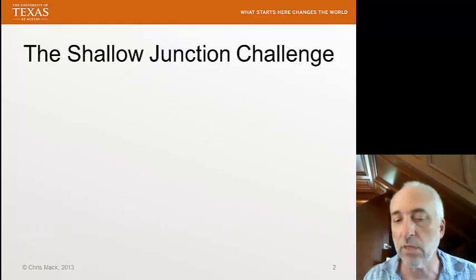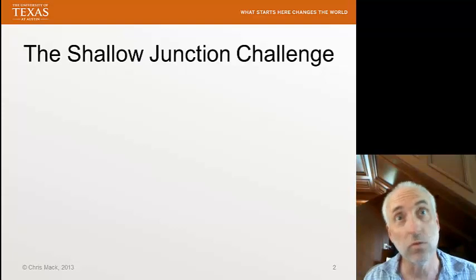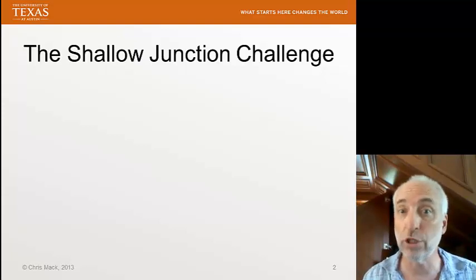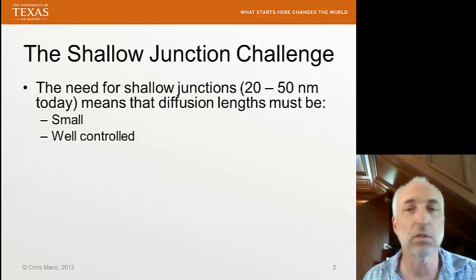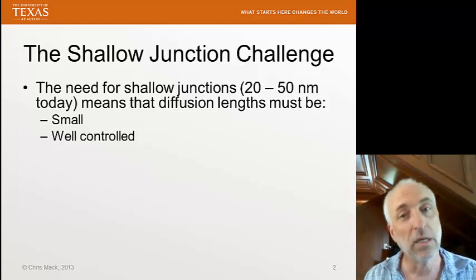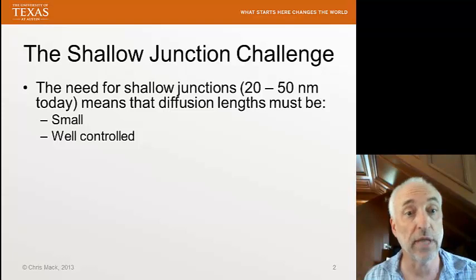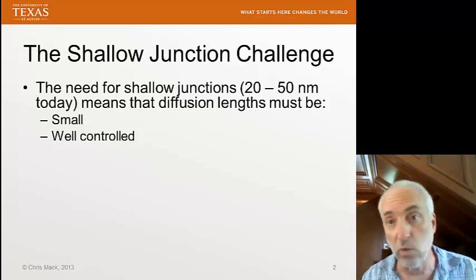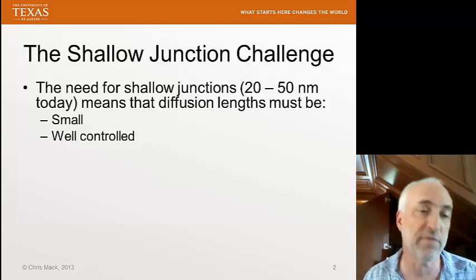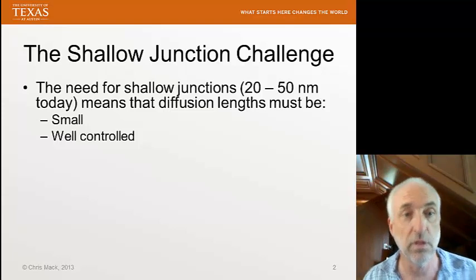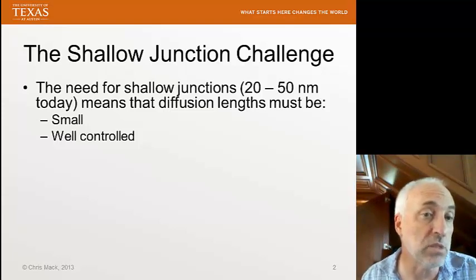Last time we talked about ion implantation and the idea of using annealing to activate the dopants. Sometimes this implant followed by anneal is intended to create shallow junctions — junctions where the junction depth into the wafer is relatively small. Today we need junctions as low as 20 nanometers. 20 to 50 nanometers is generally what we call a shallow junction today, and these junctions require low diffusion lengths.